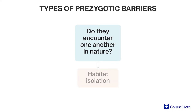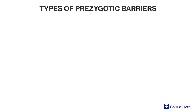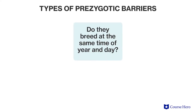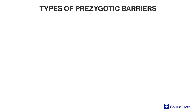Let's take a look at the several types of prezygotic barriers. One: habitat isolation. This occurs when two organisms do not encounter each other in nature — for example, due to a geographic barrier such as a canyon or mountain. Two: temporal isolation. This occurs when two organisms do not breed at the same time. For example, individuals of two species may be active at different times of the day.